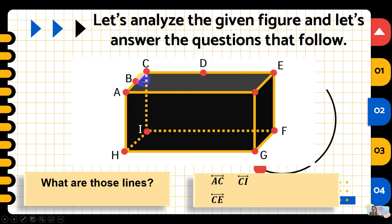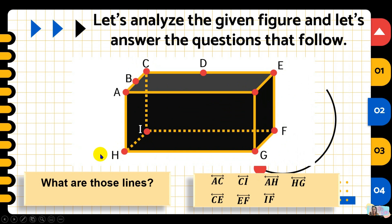The fourth line is EF or FE. The fifth line is AH or HA. The sixth line is IF or FI. The seventh line is HG or GH. The eighth line is HI or IH. The ninth line is FG or GF. Those are all the distinct lines for this figure.